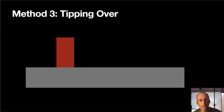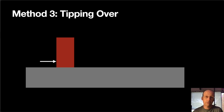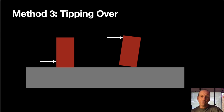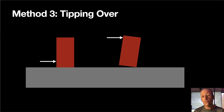Method three — I love this one: tipping over a block. If I push a block near the bottom it just slides, but if I push higher up it tilts over. I want to find the exact transition point between sliding and tipping, and I can use that to find the coefficient of friction.